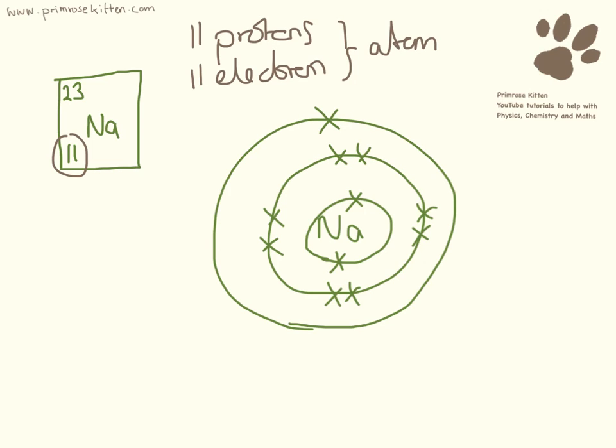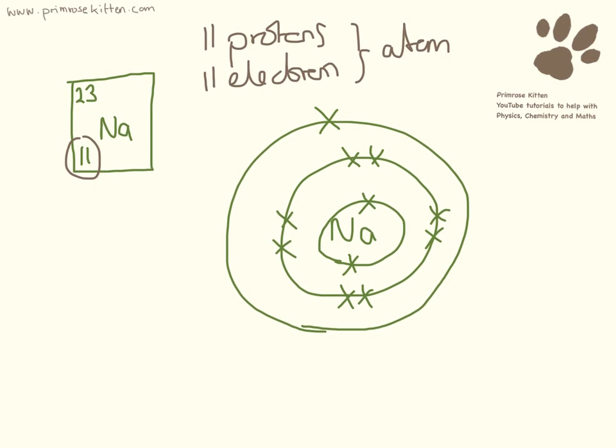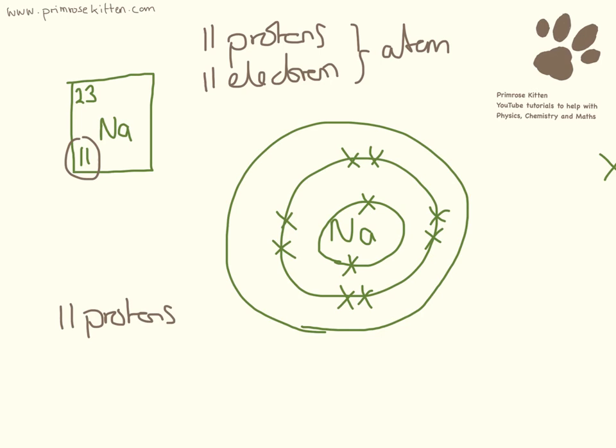Now, when sodium bonds, what it does is it gets rid of this electron, this electron here, it gets rid of it. So we've lost an electron. We haven't lost any protons, so it still has 11 protons, but we've lost an electron, so now it only has 10 electrons.